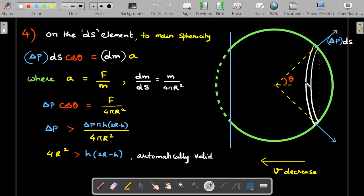Looking at only this dS element's FBD, Δp × dS × cos(θ) in the rightward direction should be responsible for the decrease in velocity. I should be able to write dm × a to maintain sphericity, where cos(θ) varies for each dS element. What is the value of acceleration? The total force from the first expression is F, so F divided by total mass should equal this acceleration, true for a rigid body. The value of dm/dS, which is mass per unit area, equals m/(4πR²). Substituting these into the equation, you get Δp cos(θ) = F/(4πR²). Taking cos(θ) < 1, Δp should be greater than this expression.